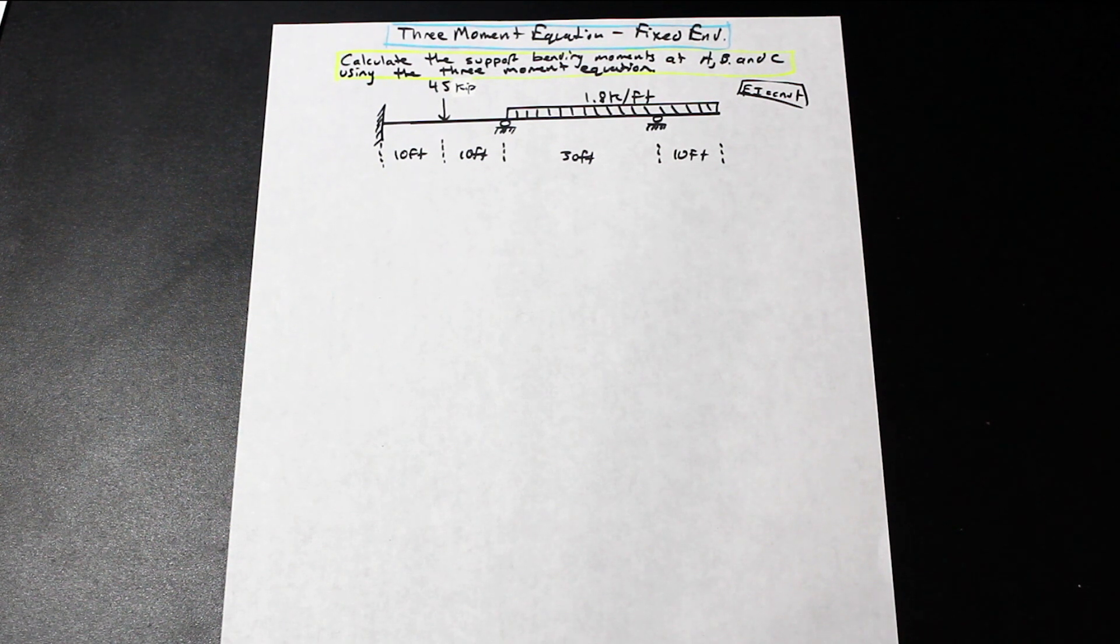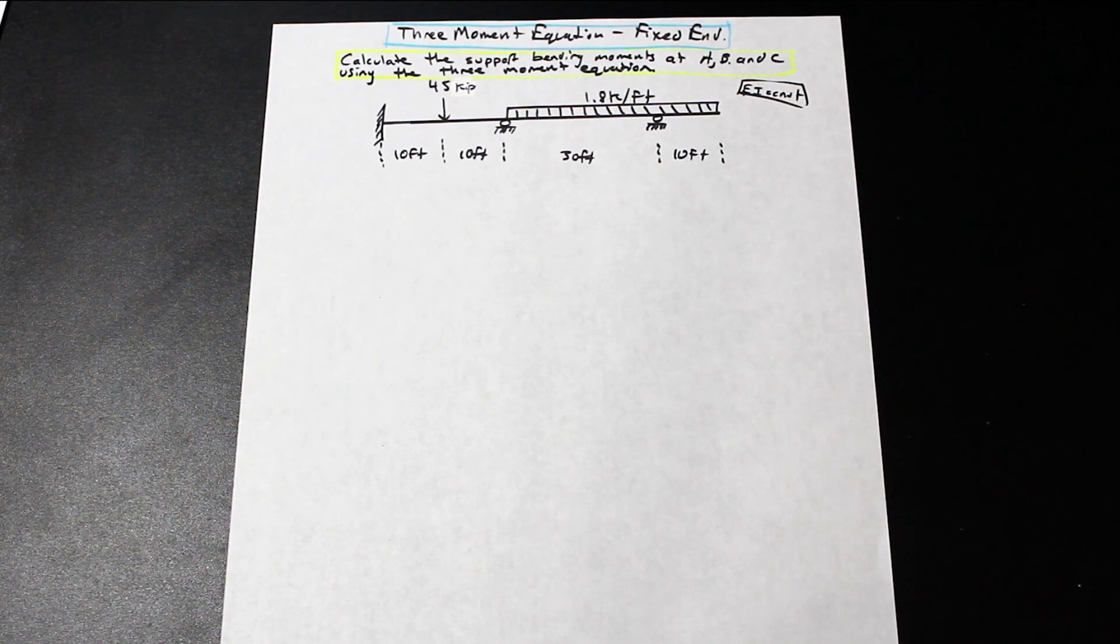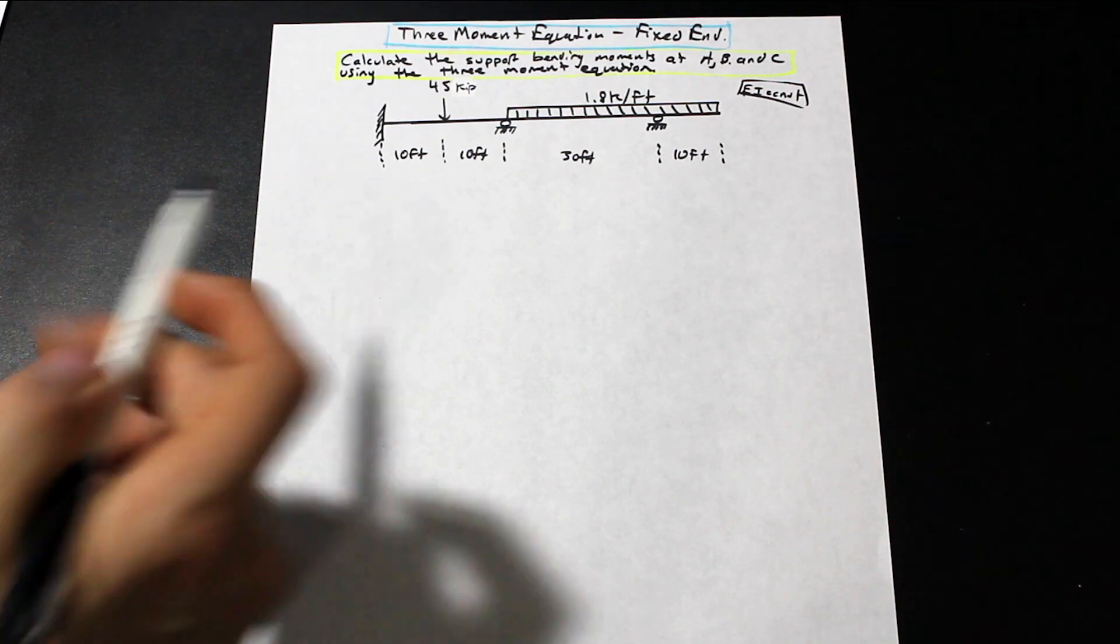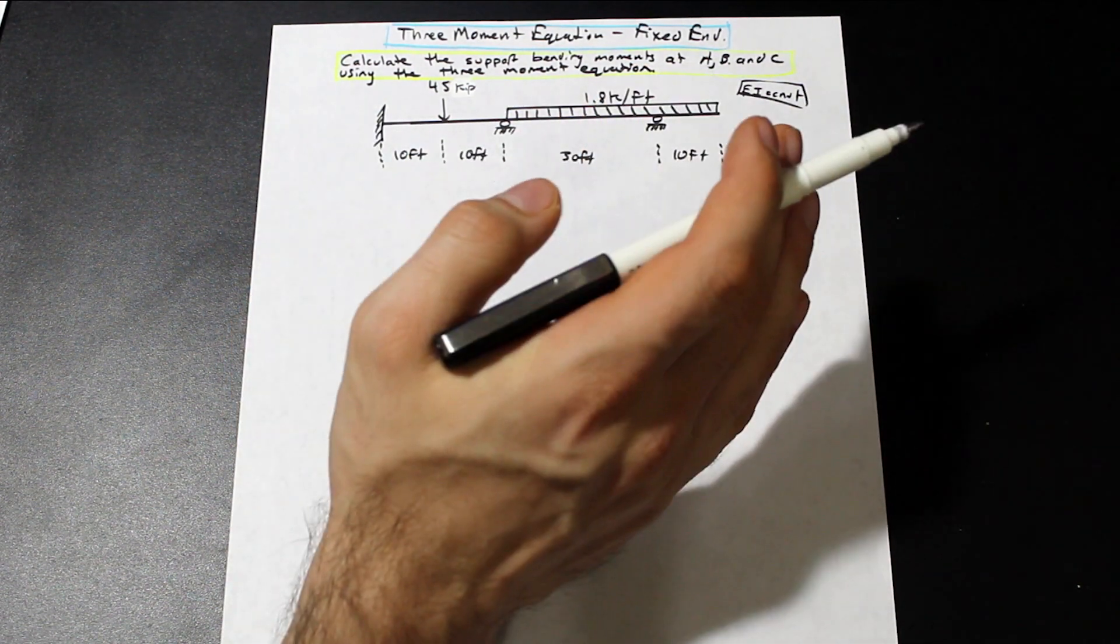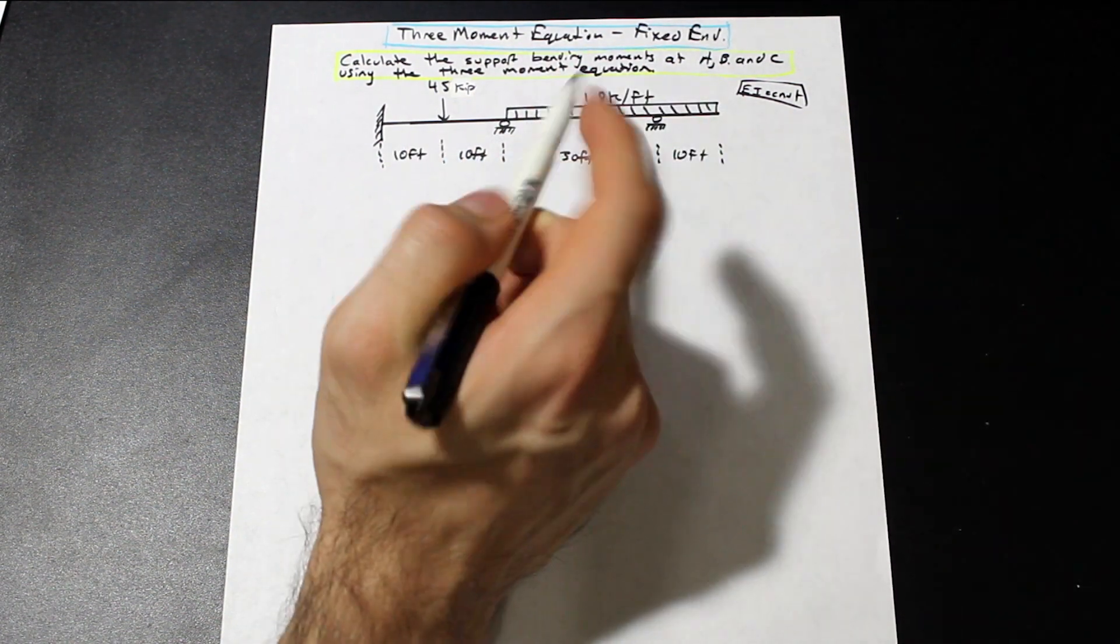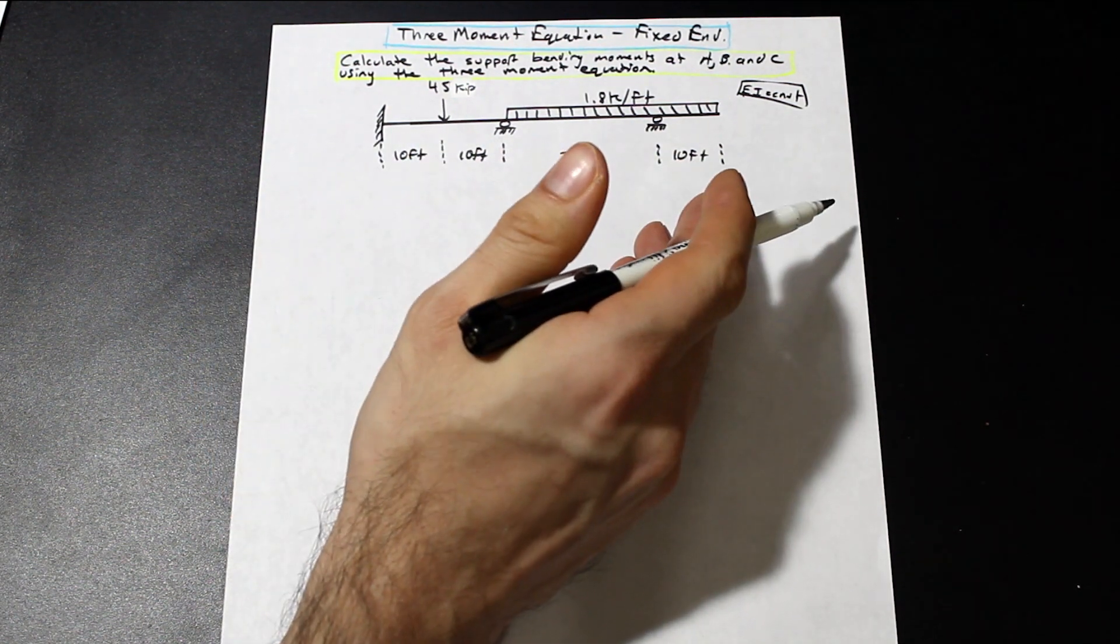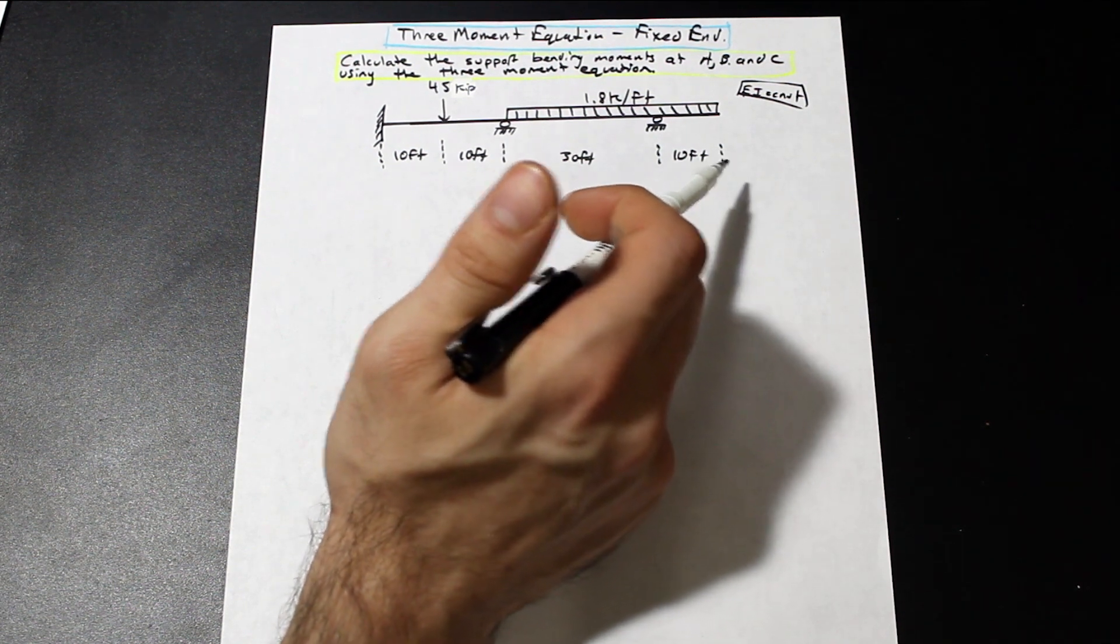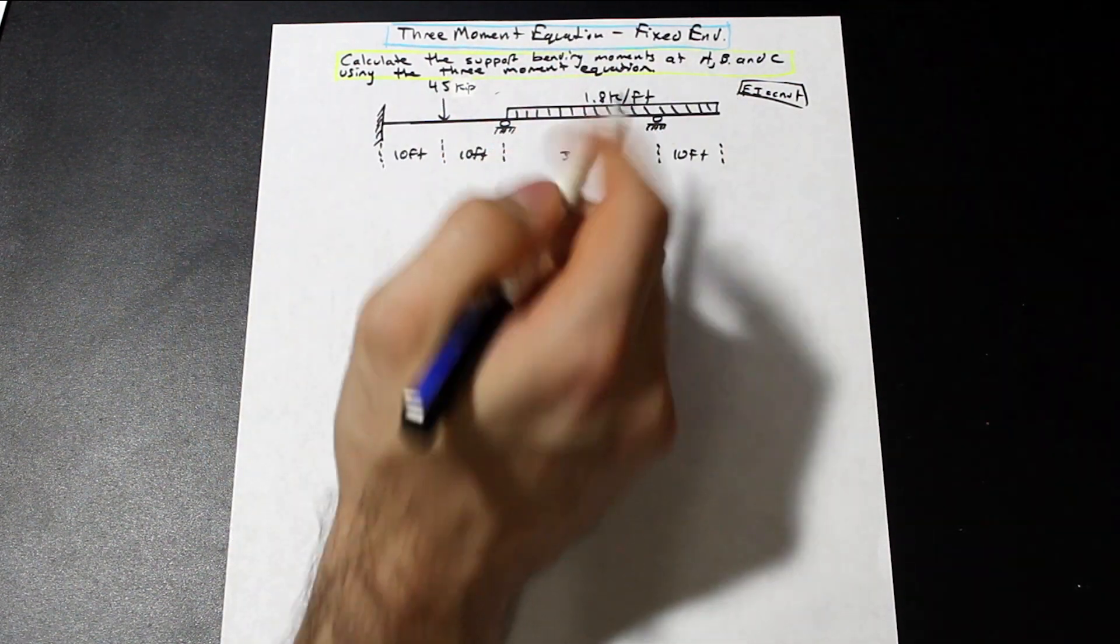This one I was meaning to do for a little while because we didn't cover it. In the three-moment equation video that we did, we only covered a video in which the ends were rollers. So in this question, we have a second-degree indeterminate three-moment equation question, which is also good because we can show how to do that. We're asked to calculate the support bending moments at A, B, and C using the three-moment equation.